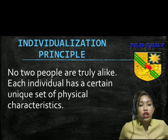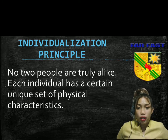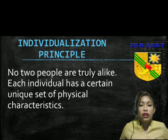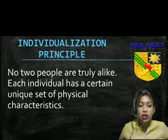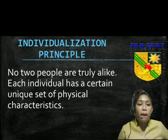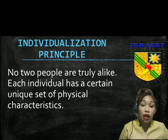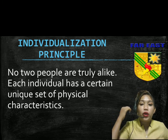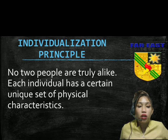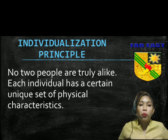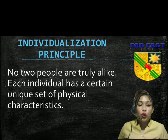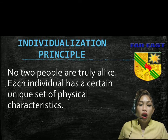Next, we have the individualization principle. No two people are truly alike. Even identical twins — just because they look alike doesn't mean they have the same characteristics, personality, or attitude. Each individual has a unique set of physical characteristics. Even twins will have at least one feature that differs — for example, one may have a mole and the other doesn't. We each have our own uniqueness.